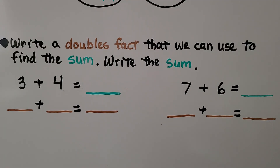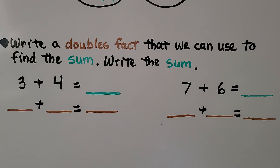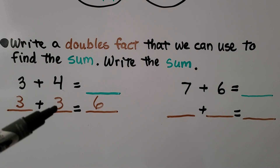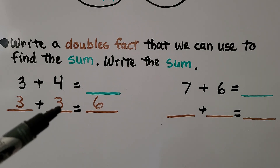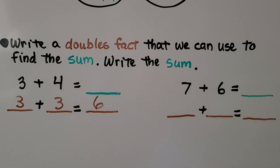Here we need to write a doubles fact to find the sum and then write the sum. For 3 plus 4, we can use a doubles fact that matches one of the addends — so we could use 3 plus 3 or 4 plus 4. Let's use 3 plus 3, which equals 6. Because 4 is one more than 3, we do 3 plus 3 plus 1 more: 6 plus 1 equals 7. So 3 plus 4 is 7.